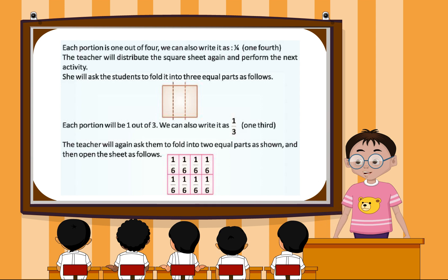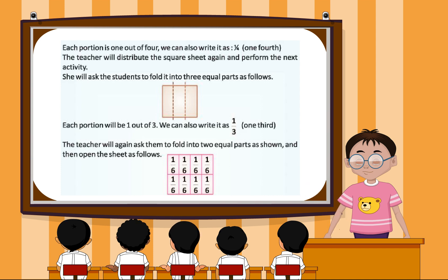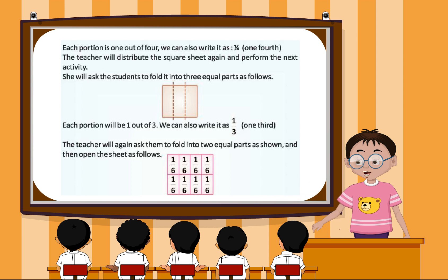She will ask the students to fold it into three equal parts. Each portion will be 1 out of 3. We can also write it as 1 by 3 or 1 third.